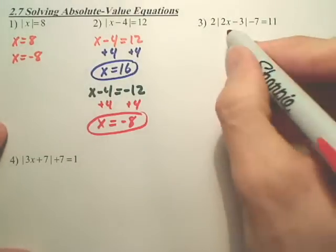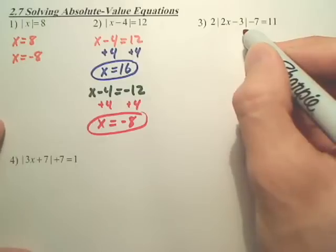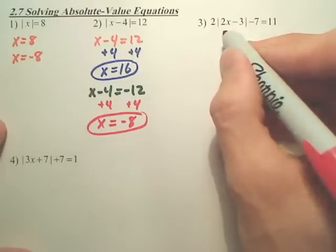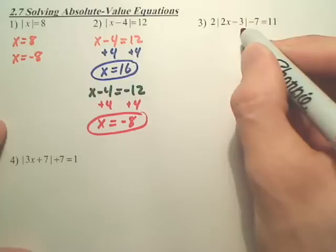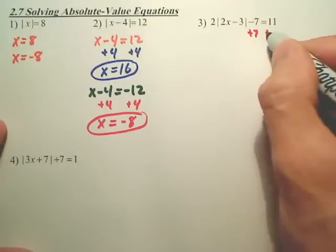I'll show you another one. Now, the first problem on 3 is you need to get the absolute values by itself. So in order to get this absolute value by itself, or I call it isolate the absolute values, you isolate it. You first need to get rid of this 7. So you're going to add 7 to both sides.